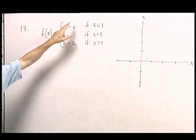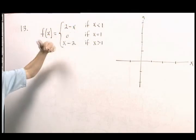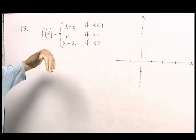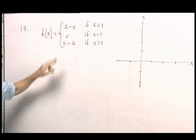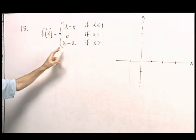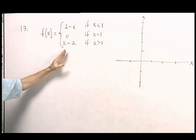Of course, y equals 2 minus x is a straight line that has a negative slope to it. Y equals x minus 2 is a straight line that has a positive slope.